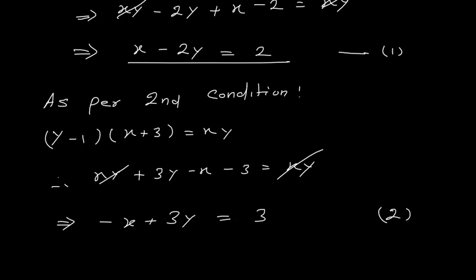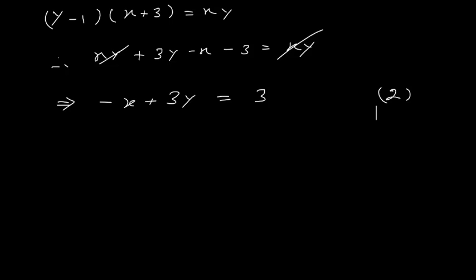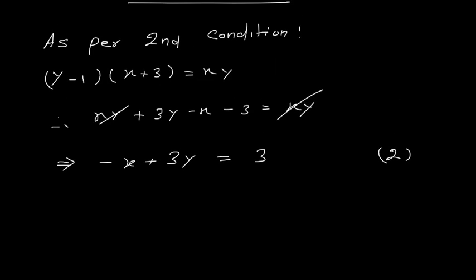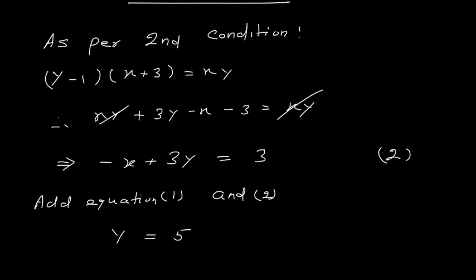So equation 1 is x − 2y = 2 and equation 2 is −x + 3y = 3. To solve, we add the two equations. The x and −x cancel, giving 3y − 2y = 3 + 2, so y = 5.